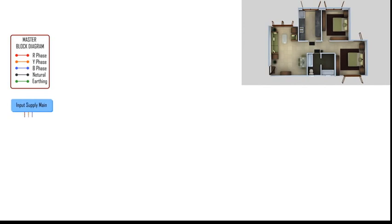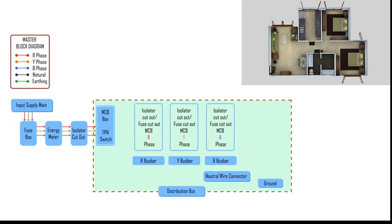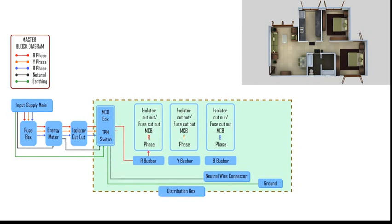First, we will do the wiring for the input supply board, which means connecting the fuse box, the energy meter, and the isolator cutoff through the wires. The next step is to wire and connect the isolator cutout to the distribution box, and then to the internal wiring of the distribution box. This means connecting the main circuit breaker to the isolator switches of each phase.